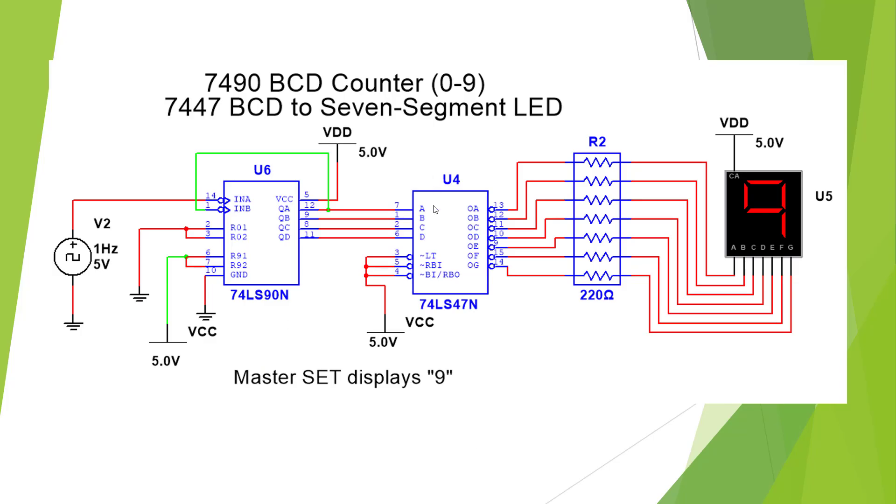Here we show our 7490 BCD counter connected to our decoder through our resistor to our display. What we have here is our master set. We have pin 6 and 7 tied high which is going to make a master set which is going to output a 9 and ignore all the other inputs.